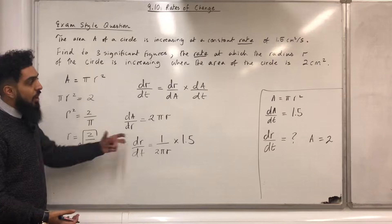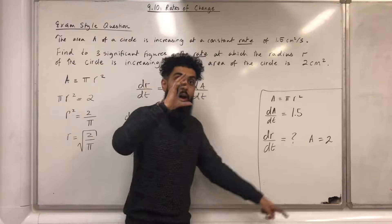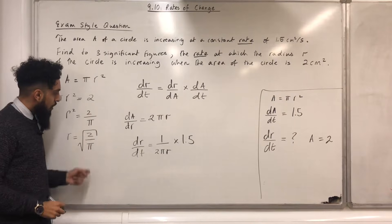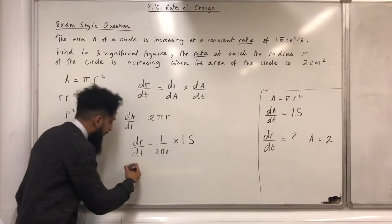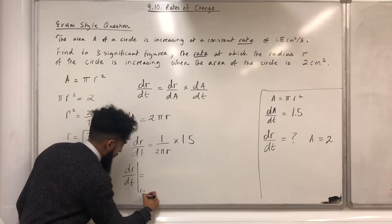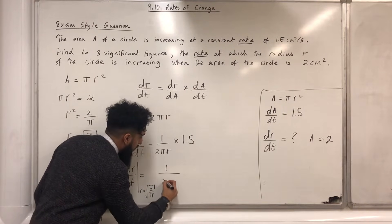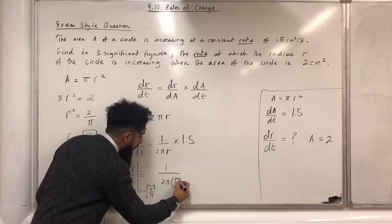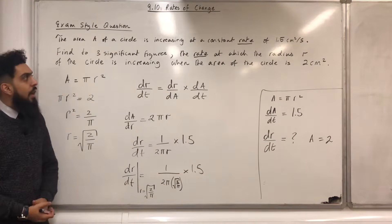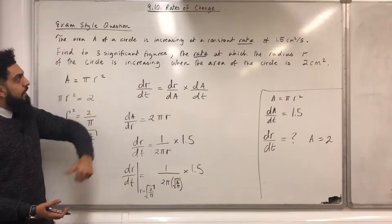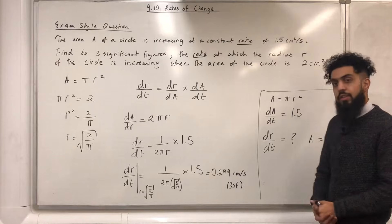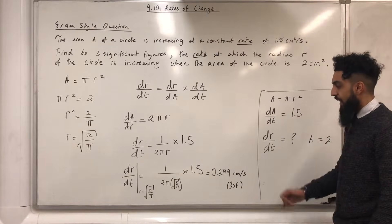I want dr over dt when A equals 2, and I know that when A equals 2, r equals the positive square root of 2 over pi. Substituting into the expression: dr over dt equals 1 over (2 pi times square root of 2 over pi), multiplied by 1.5. Putting this into the calculator and rounding to three significant figures gives dr over dt equals 0.299 centimeters per second.